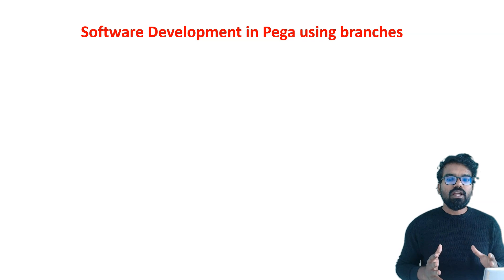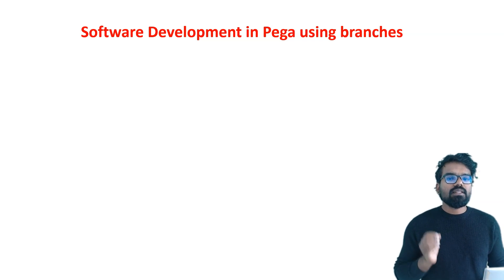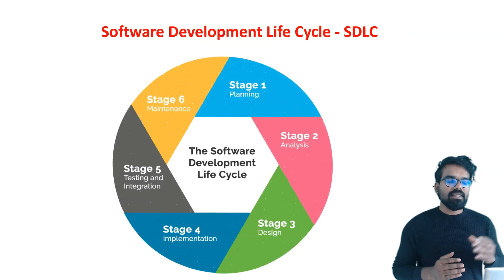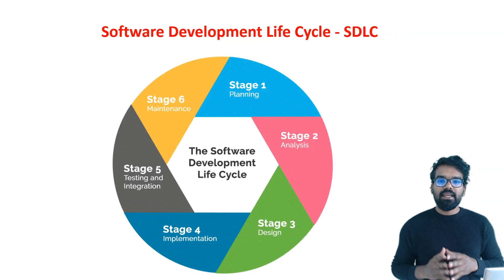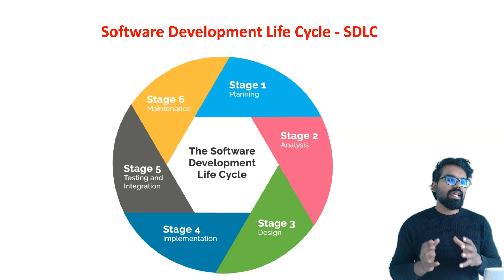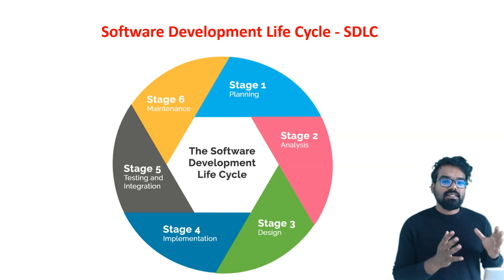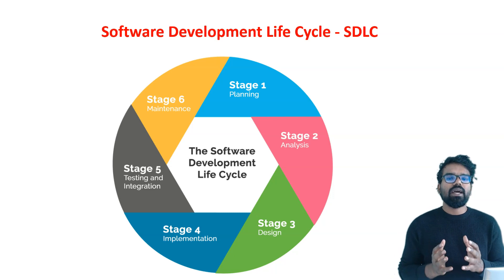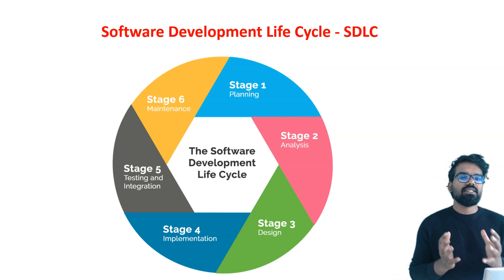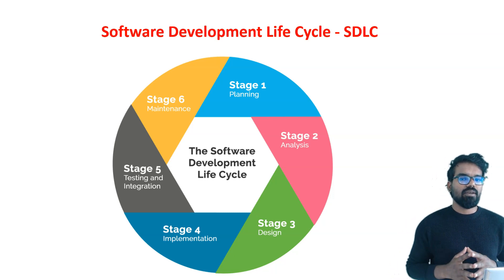Before talking about Pega branches, I would like to start with software development lifecycle management. I hope you must have seen this lifecycle in many places. You can define a software development lifecycle at different stages. This is the standard representation, where you can have 6 stages in your software development.